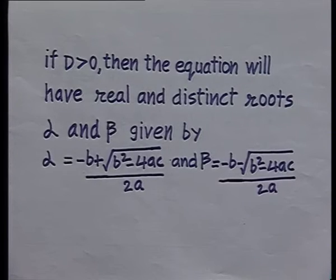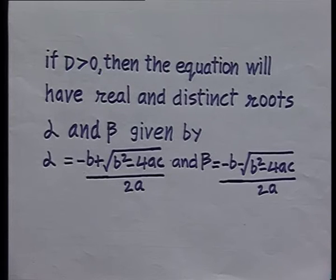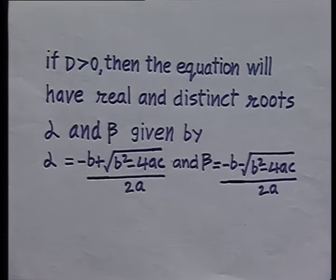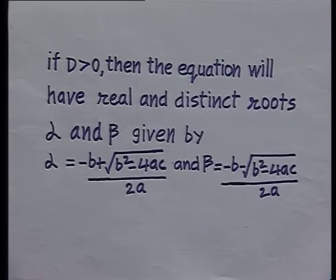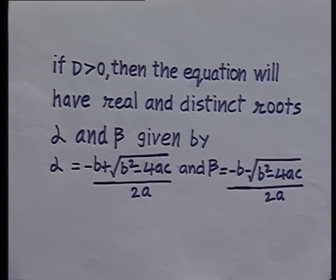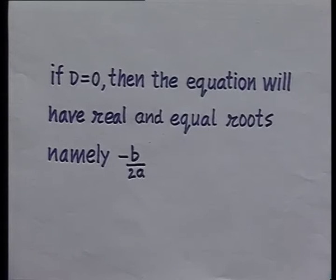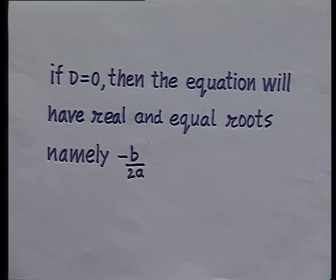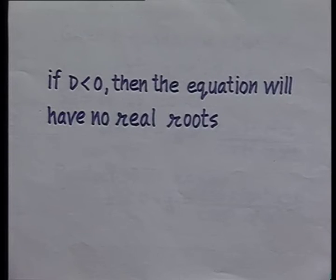If d > 0, then the equation will have real and distinct roots α and β, given by α = (-b + √(b²-4ac)) / 2a and β = (-b - √(b²-4ac)) / 2a. If d = 0, then the equation will have real and equal roots, namely -b/2a. If d < 0, then the equation will have no real roots.